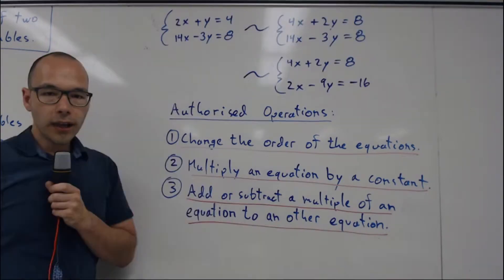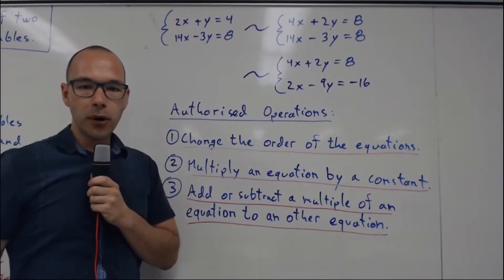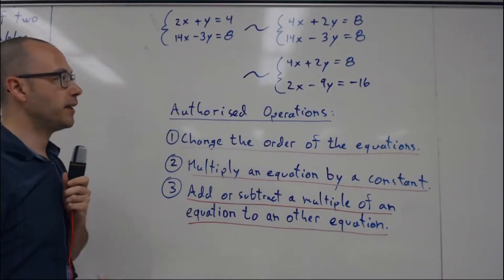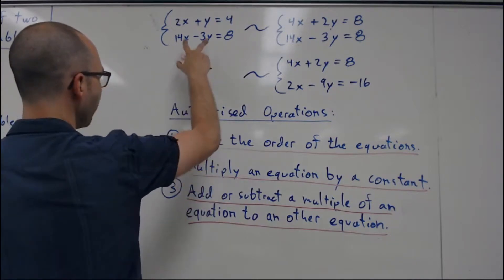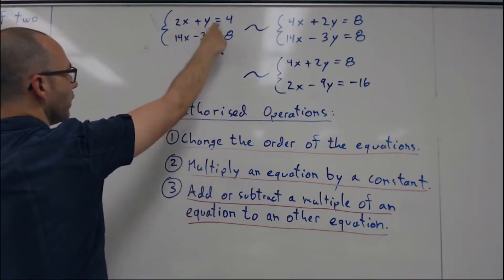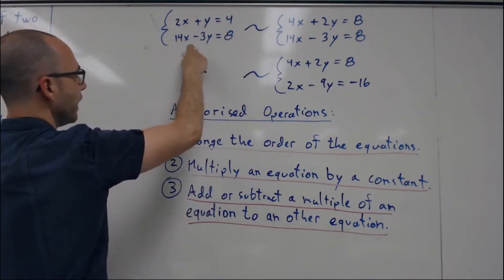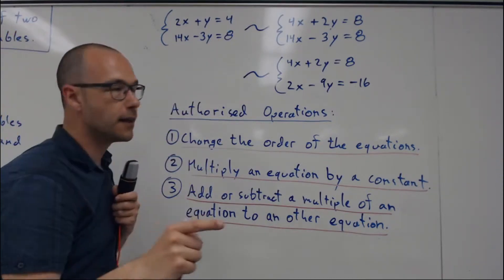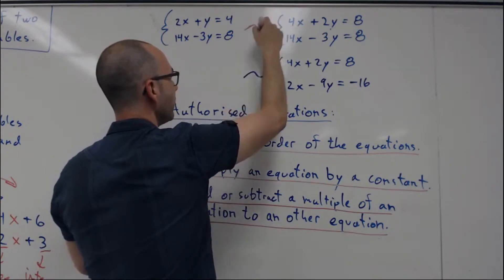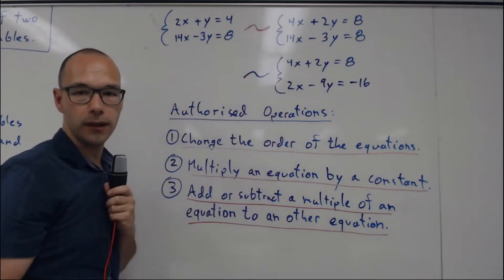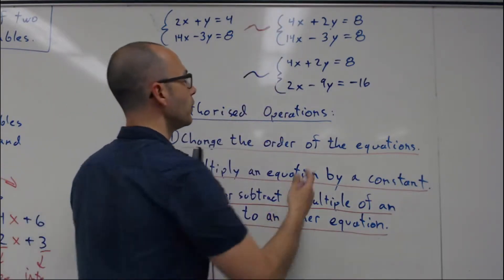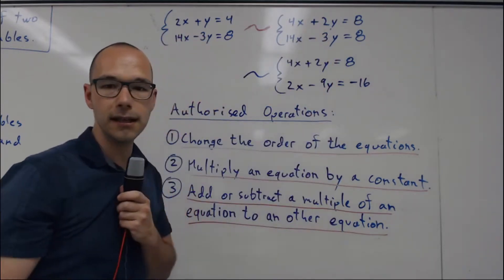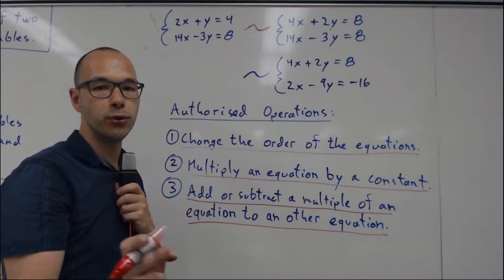Now, let's look at an example. So now we're going to do examples of equivalent systems of linear equations. So I start with this one where I have 2x + y = 4 and 14x - 3y = 8. And this system is equivalent, so that wavy symbol is the equivalent symbol to this system. And of course, we can see that equation number two did not change.